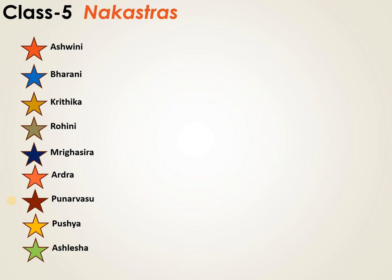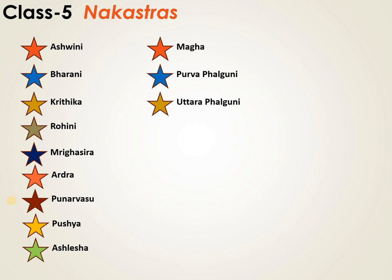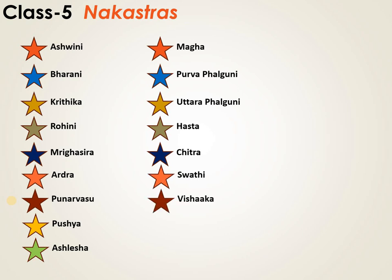On the other hand, we have Magha, Poorvaphalguni, Uttaraphalguni, Hasta, Chitra — or it is called Chitta — Swati, Vishakha, Anuradha, and Jyeshtha.